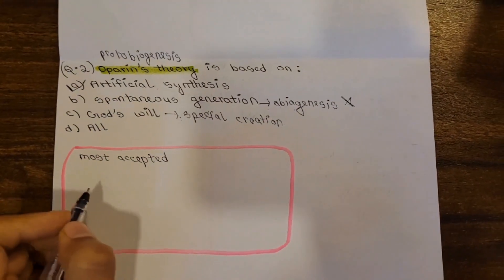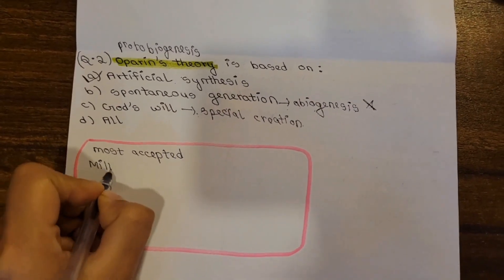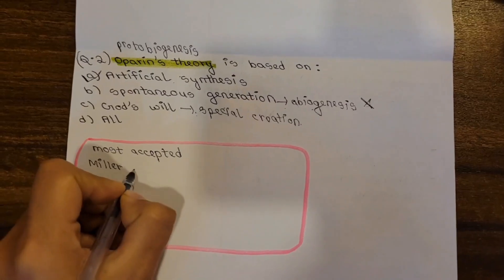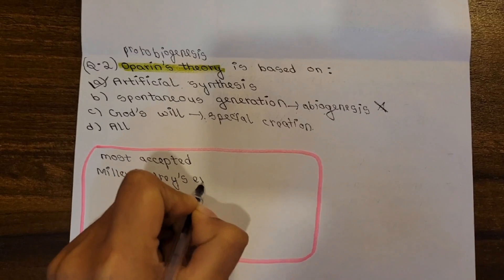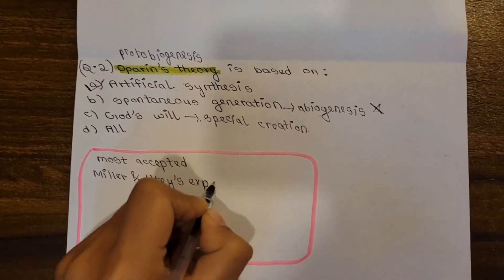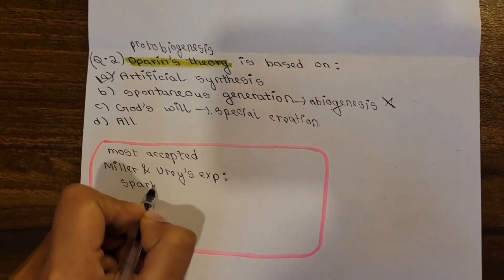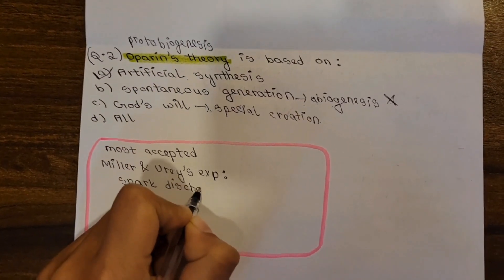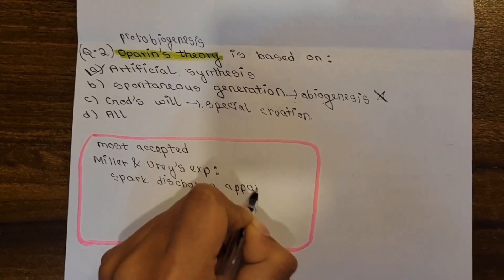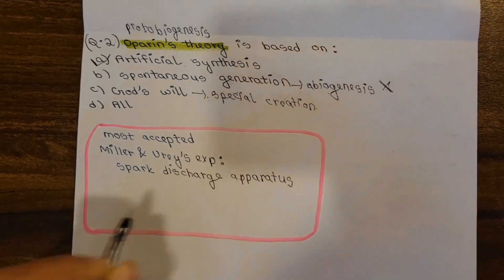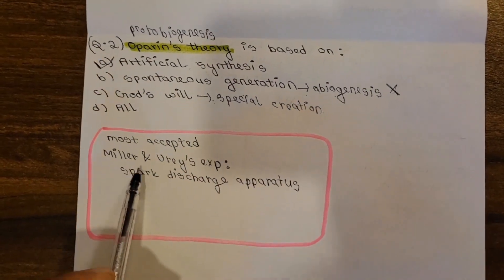Oparin's theory is proven through experiments — most importantly the Miller and Urey experiment. In this experiment, a spark discharge apparatus was used to simulate the primordial atmosphere conditions, and it proved Oparin's theory of the chemical origin of life. This experiment is extremely important from an exam point of view.